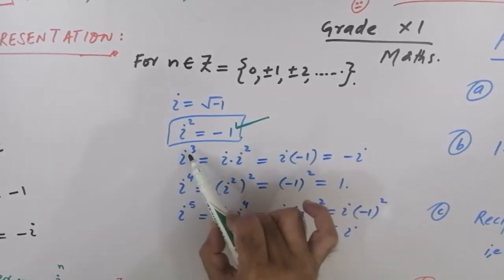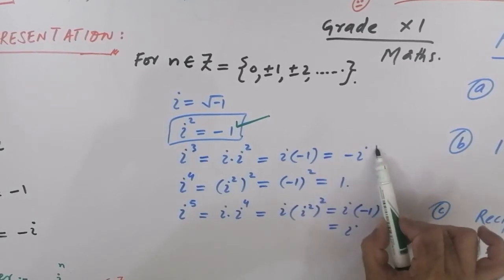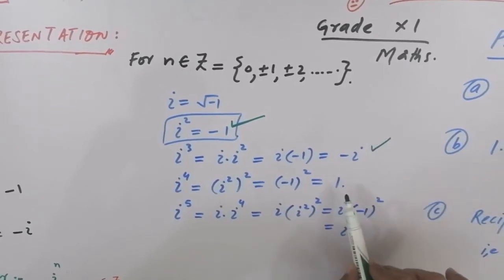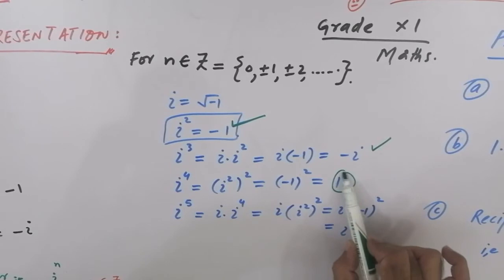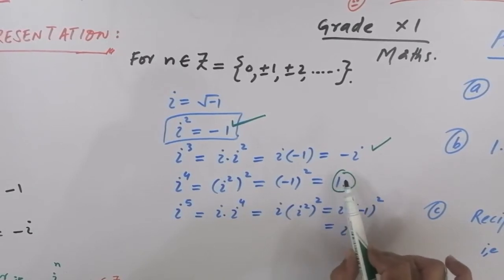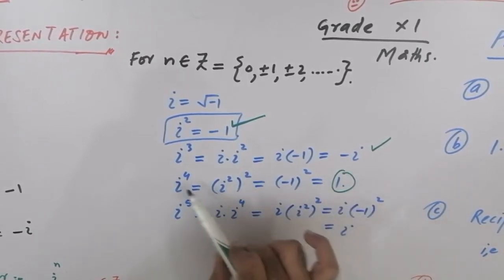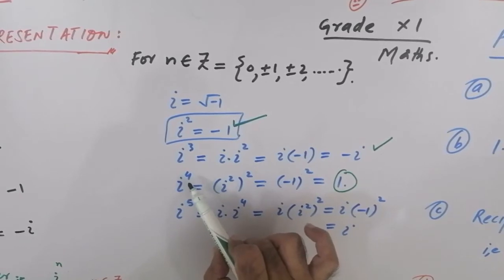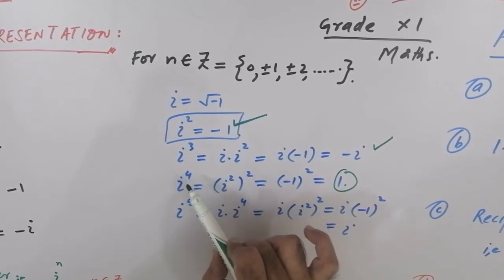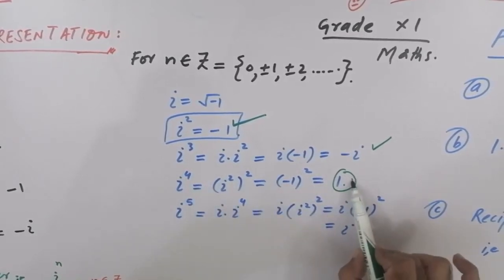So IOTA cube, which is an odd power, is minus IOTA. IOTA to the power 4, which equals (IOTA²)², gives us one. IOTA to the power 4 means the power is a multiple of 4, such as 4 plus one giving power 5.